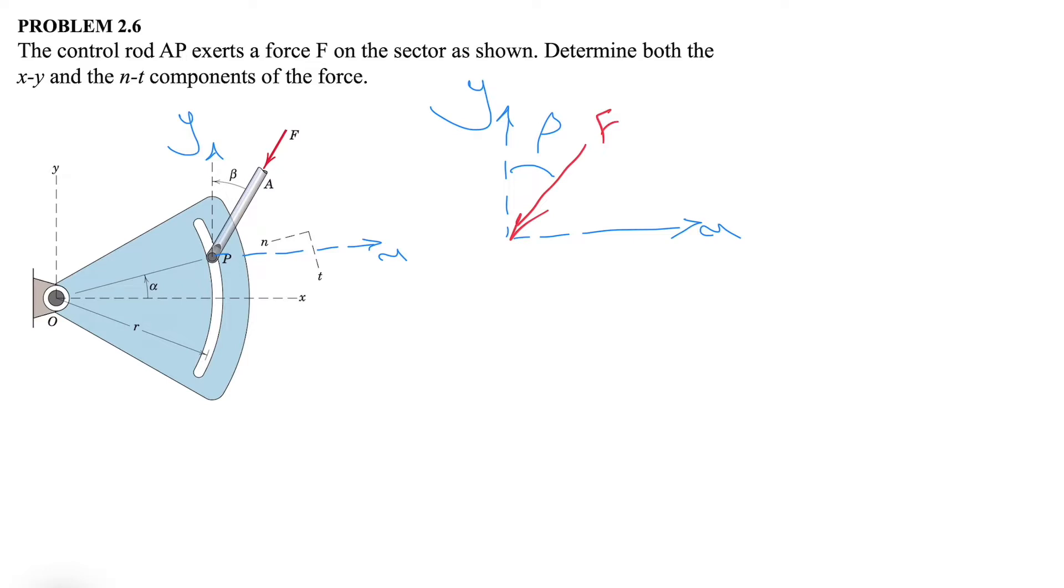We also know this angle is beta. What I'm showing here is our Fx and this will be our Fy. Let's start with Fx which is a negative amount, and this will be our Fy which is also negative. For Fx we simply have minus F times sine of beta, and for Fy we'll have minus F times cosine of beta.